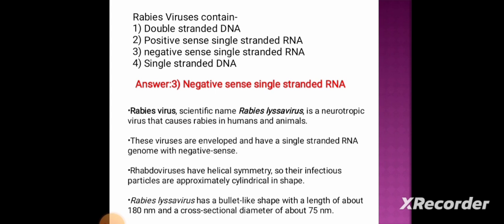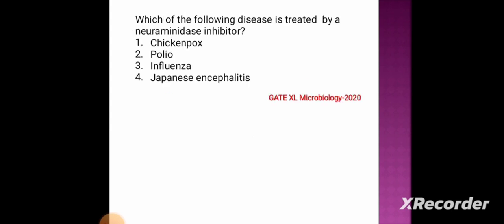The rabies virus, scientific name Rabies lyssavirus, is a neurotropic virus that causes rabies in humans and animals. These viruses are enveloped and have a single-stranded RNA genome with negative sense. They have helical symmetry, so their infectious particles are approximately cylindrical — bullet-like in shape, with a length of about 180 nanometers and a cross-sectional diameter of about 75 nanometers.